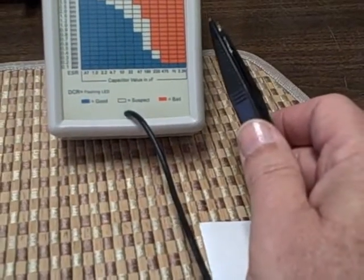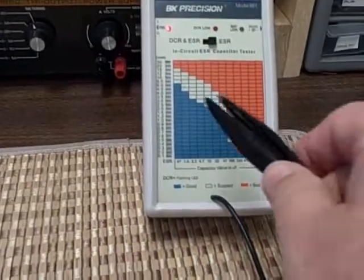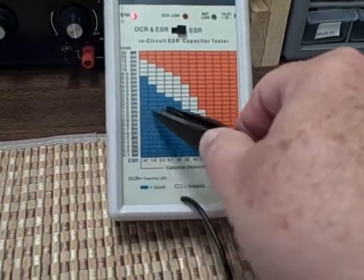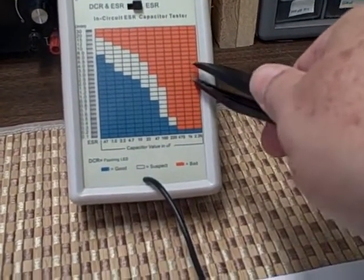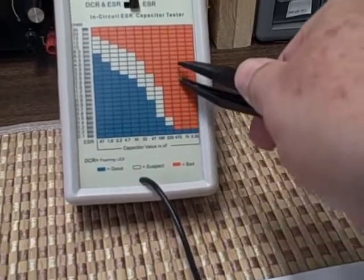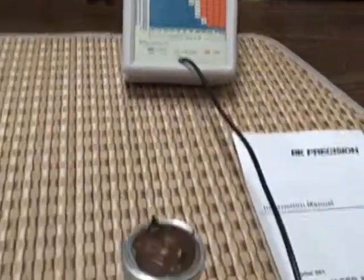If it's over 0.1 ohm then it considers it bad. We were reading 1.5 ohms which puts it right up in here, and if you come to the 1250 you can see we're quite a ways up here, so definitely this one's a bad one.